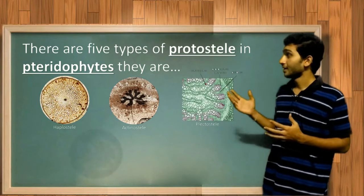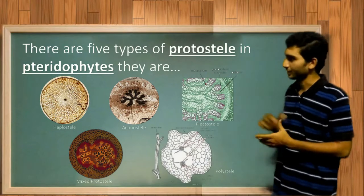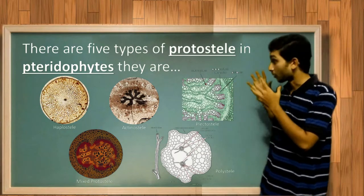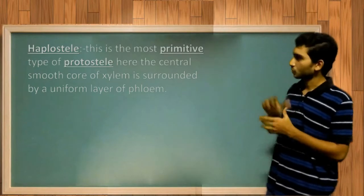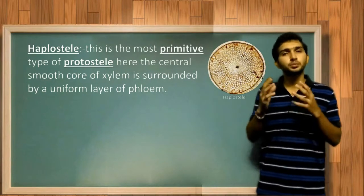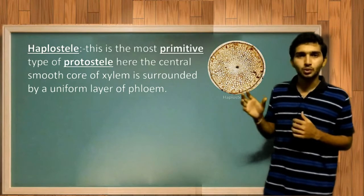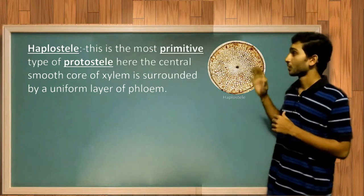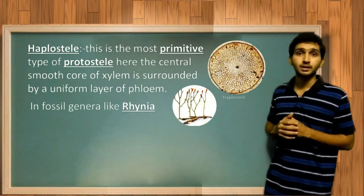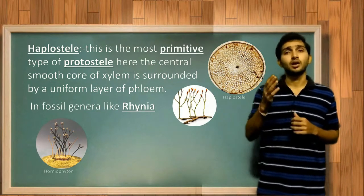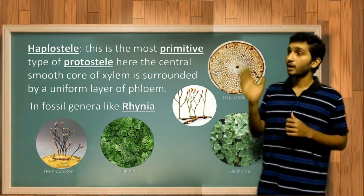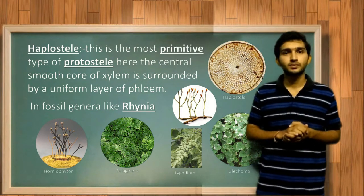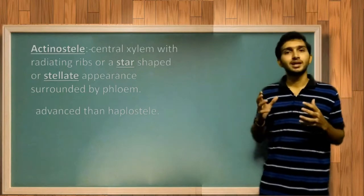The five types of protostele in pteridophytes are: haplostele, actinostele, plectostele, mixed protostele, and polystele. Haplostele is the most primitive type of protostele, in which the central core of xylem is surrounded by phloem. We can find this type of stele in fossil genera like Rhynia, Horneophyton, as well as in Selaginella stems, Lycopodium, and Psilotum.